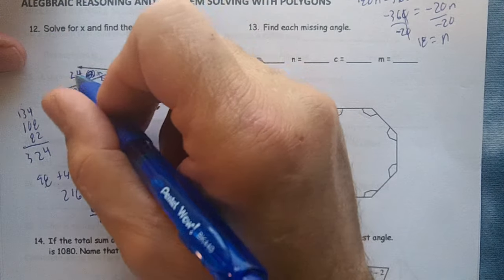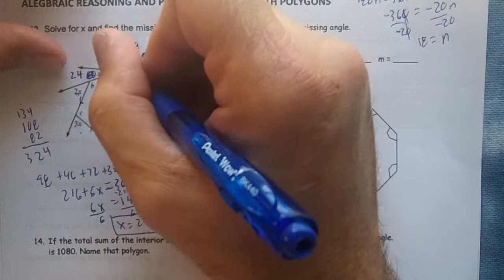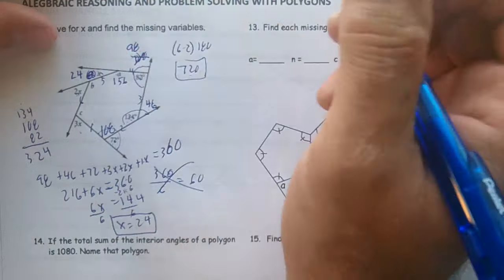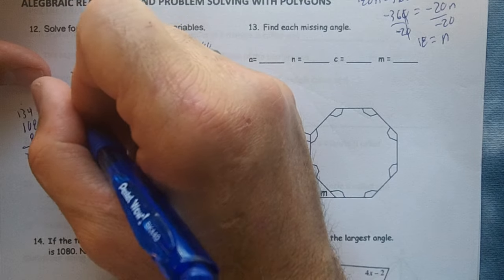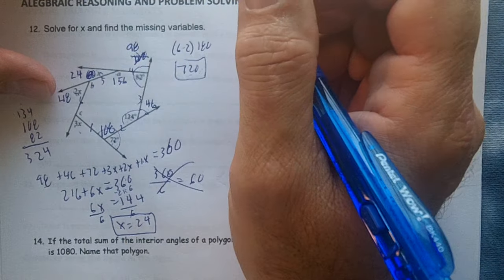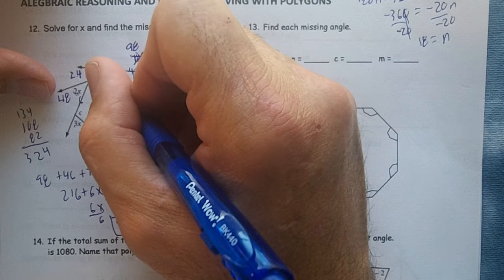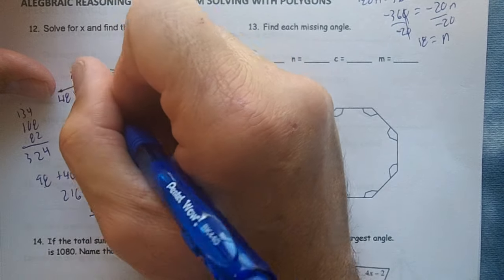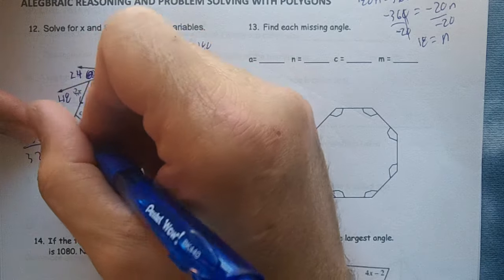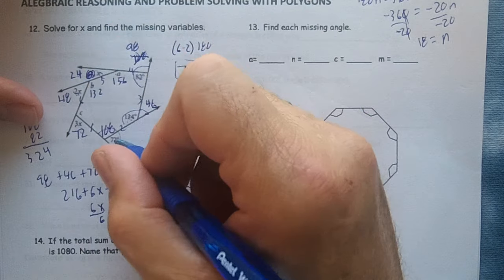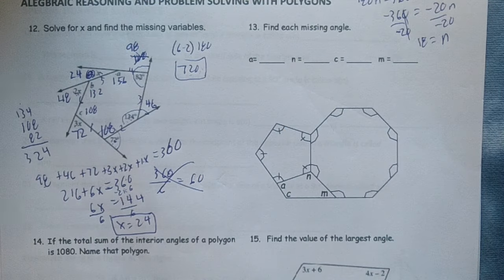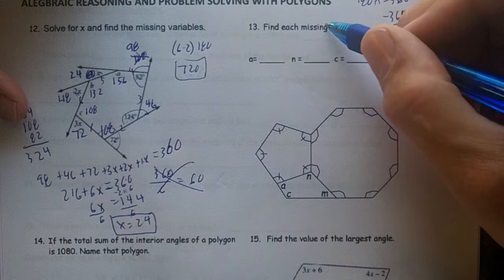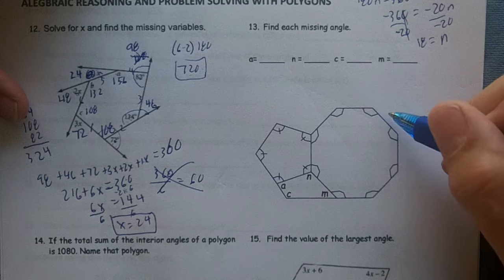So x would be 24. That means A, subtract from 180, you would get 156. 2 times 24 is 48. Take 24 away from 146 and you get 132. And then 3 times 24 is 72. 72 and 108 would be right here, wouldn't it? Wow, that was a lot of work. Okay, right here, find each missing angle.